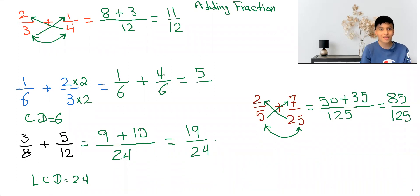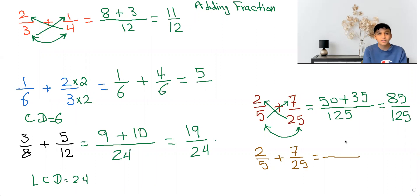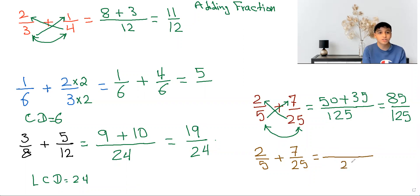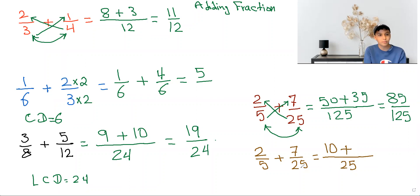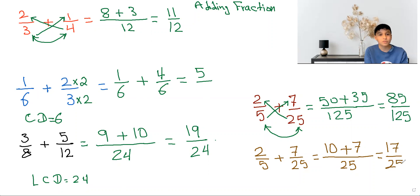Now I'm going to show you how to do the third method. If you want to find the common denominator, you look at the biggest number and see if the smallest number can go into the biggest number. And yes, 5 can go into 25, so 25 is our lowest common denominator. And then you do 25 divided by 5, which will give you 5. And then you do 5 times 2, which will give you 10, and then you put a plus sign right beside it. And then you do 25 divided by 25, which will give you 1. And then you do 1 times 7, which will give you 7. And then you add 10 and 7, which will give you 17, and as always, keep the denominator the same, which will give you 25.